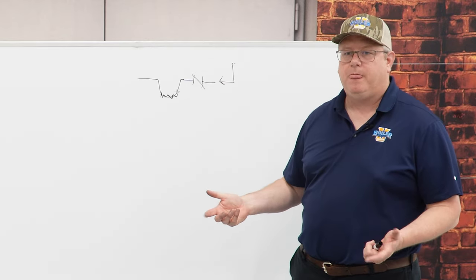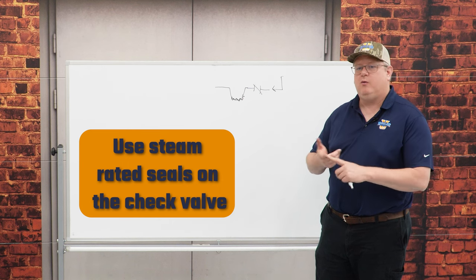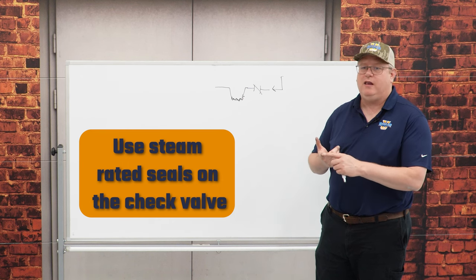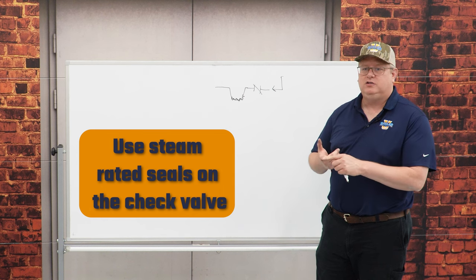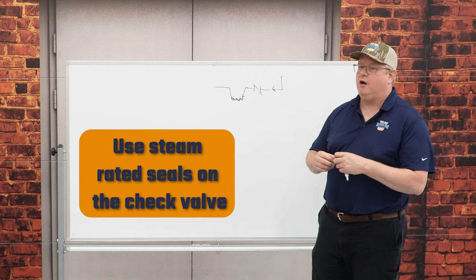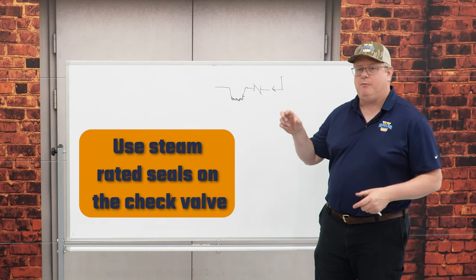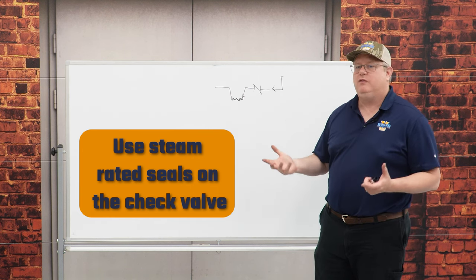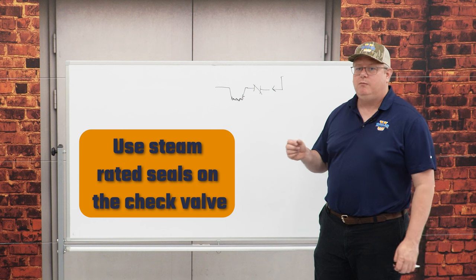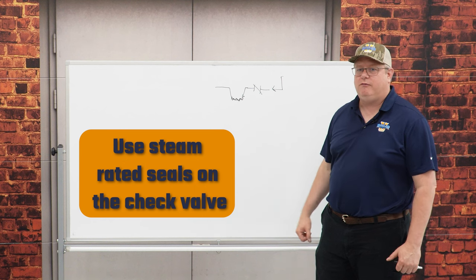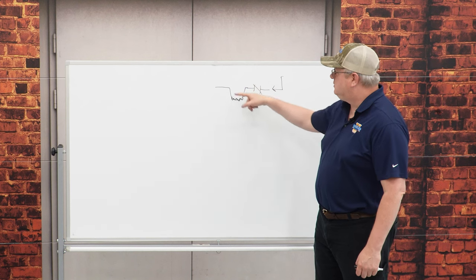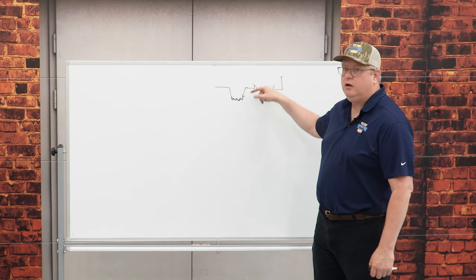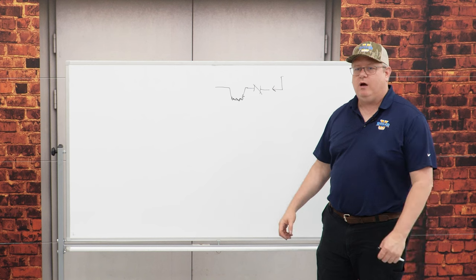In addition to that, we probably want to look and make sure that we've got steam-rated seals on that check valve. If we've got an o-ring style or something that's got black rubber in there, it's not going to hold up very well. But a good Teflon-seated valve should last for a good number of years, and adding just a little siphon loop before it will actually protect that valve as well.